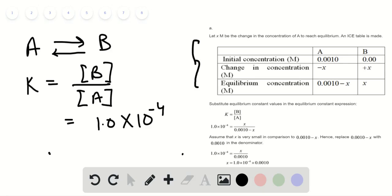Substituting those values, we have x equal 1.0 into 10 raised to power negative 7m. Yes, where x is a small approximation is valid up to the percentage of 5%. So since the ratio over here is less than 5%, the approximation is valid.